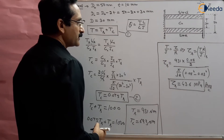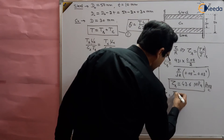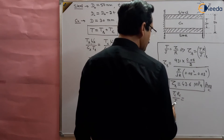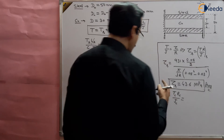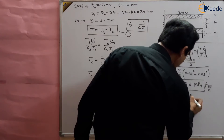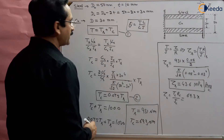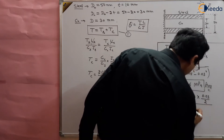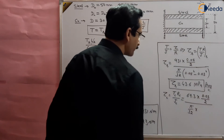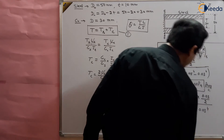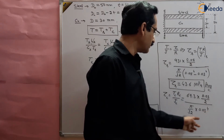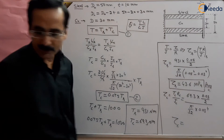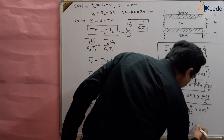Next, the shear stress in copper: τ_c = T_c × R_c / J_c = 69.3 × (0.03/2) / [(π/32)(0.03⁴)]. Solving this, the maximum shear stress in copper comes out to be 13.1 MPa.